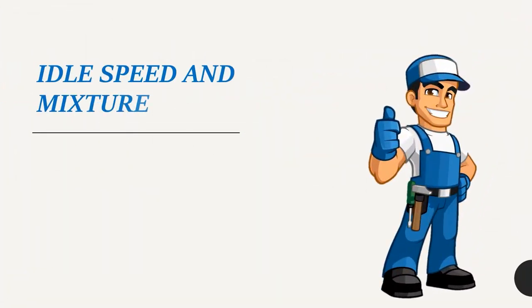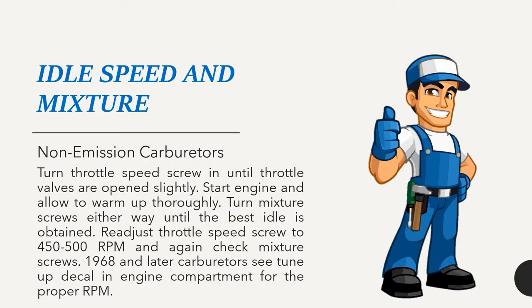Idle speed and mixture — non-emission carburetors: Turn throttle speed screw in until throttle valves are open slightly. Start engine and allow to warm up thoroughly. Turn mixture screws either way until the best idle is obtained. Readjust throttle speed screw to 450–500 RPM and again check mixture screws. For 1968 and later carburetors, see tune-up decal in engine compartment for proper RPM.